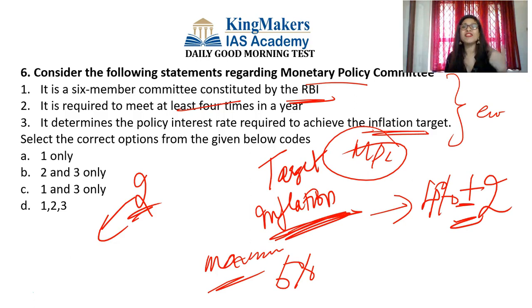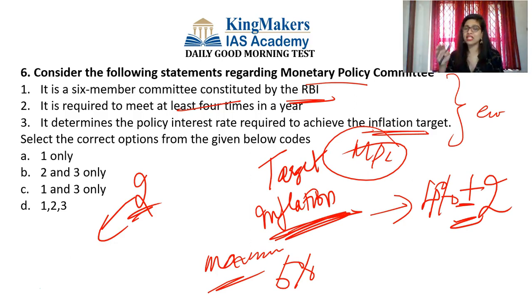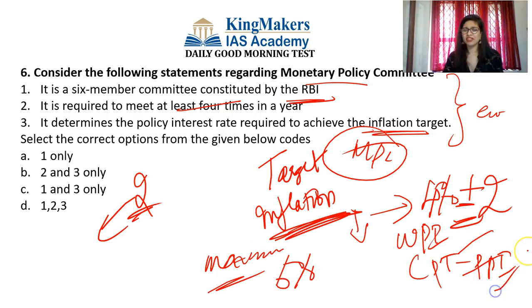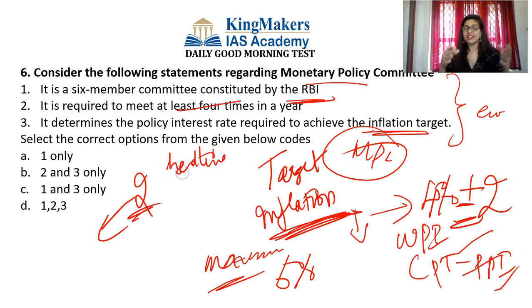Question 8: in which of the following states is the Ranganathittu Bird Sanctuary located? Options: A. Manipur, B. Andhra Pradesh, C. Karnataka, D. Kerala. From the name 'Ranganathittu,' it's clear it could be a South Indian state. The answer is option C: Karnataka. Ranganathittu Bird Sanctuary is also known as the Pakshi Kashi of Karnataka. It is located in the Mandya district of Karnataka. It was formed when Kanti Rava Narasimha Raja Wadiyar of the Mysuru royal family constructed an embankment across the Cauvery River in 1648.